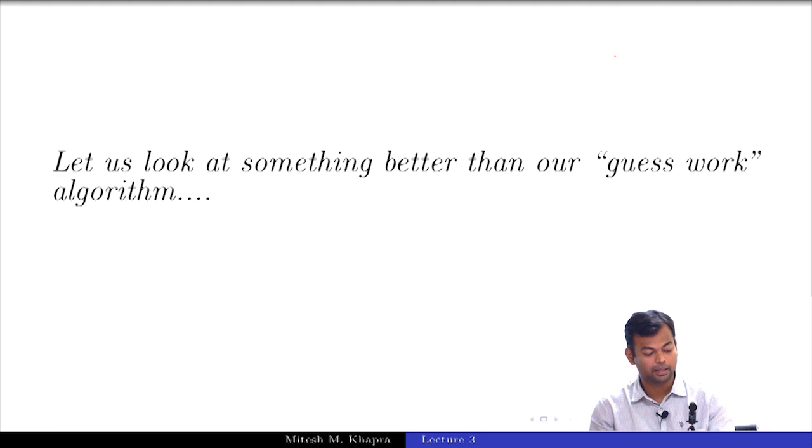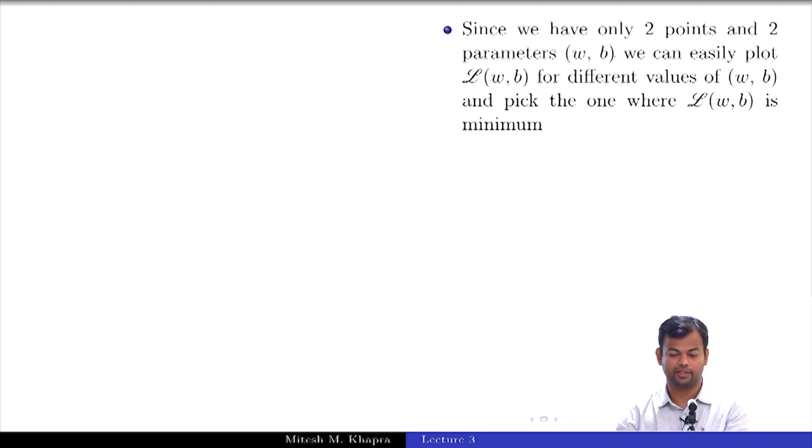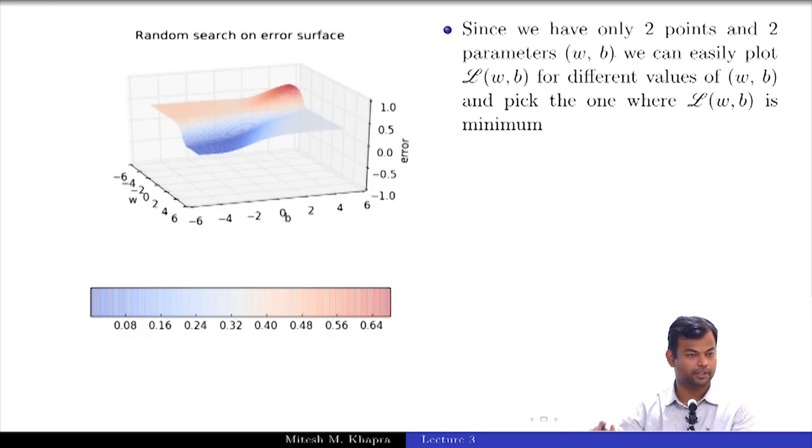So let us look at something which is better than our guesswork algorithm. Since we have only two points and two parameters, what I can do is I can take all possible values of w and b. I was picking up some values of w and b - why just pick some values of w and b? I will pick all possible values of w comma b and I will fix the range. I cannot pick it from minus infinity to infinity, but I will pick a range. I will say from minus 6 to 6 let me try all values of w comma b, compute the loss and plot it. Now let me tell something about this error function because this is going to stay with us for quite some time.